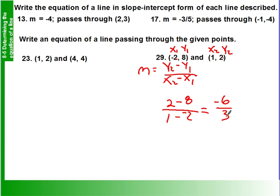One minus negative two is three. Well, what is negative six divided by three? Well, that's just negative two. So we have a slope, an m value of negative two.